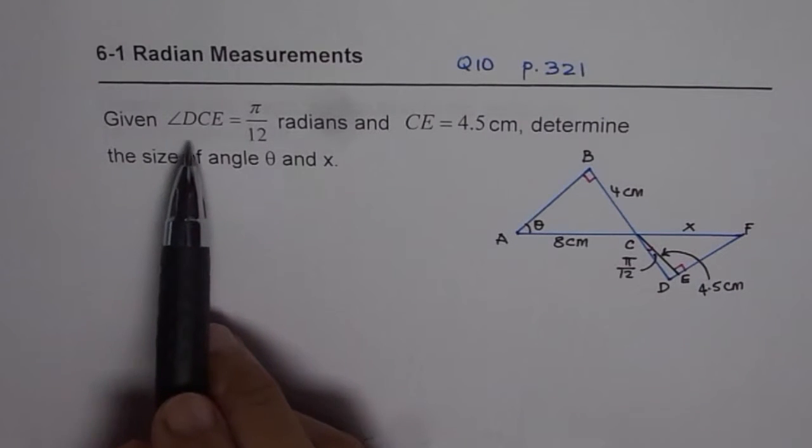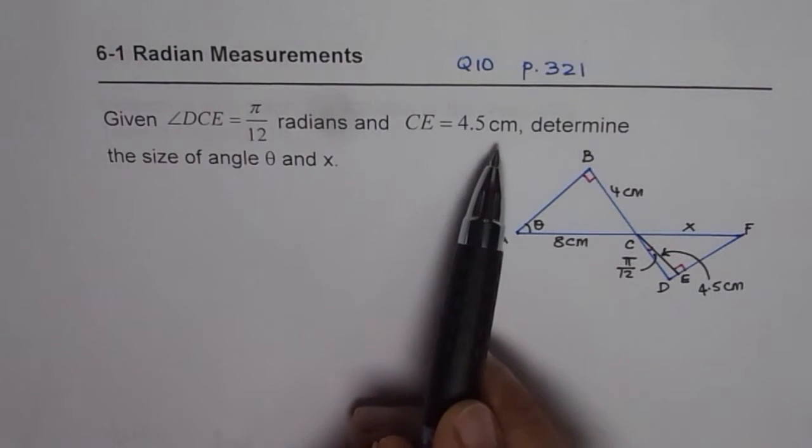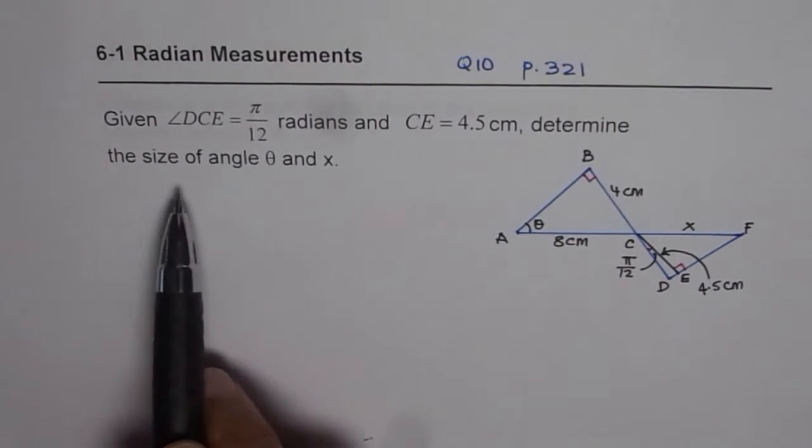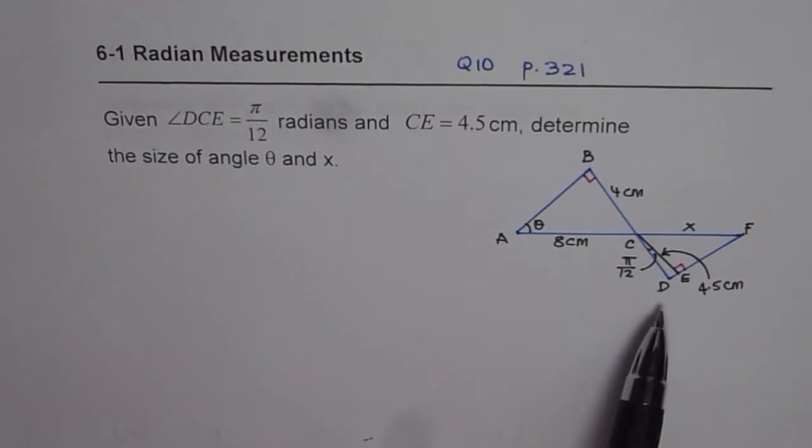Given angle DCE equals to π/12 radians and CE equals to 4.5 cm, determine the size of angle θ and x. The diagram is given before you. It is not to the scale.